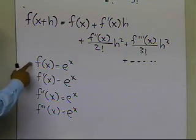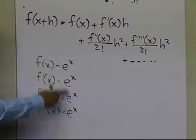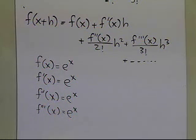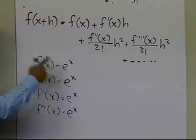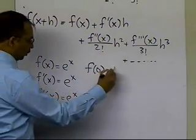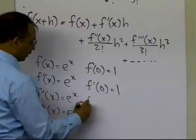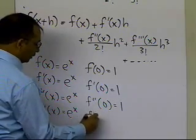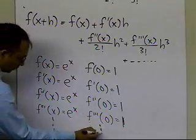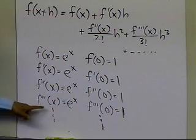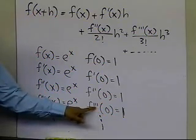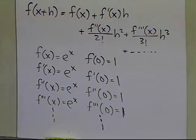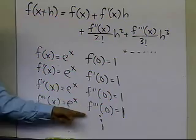What we know about e to the power of x is that we know the value at x equal to 0: e to the power of 0 is 1. We don't directly know the value of e to the power of something other than 0. So the value of the function at 0 is 1, the value of the derivative at 0 is 1, the value of the second derivative at 0 is 1, and the third derivative at 0 is 1, and so on. All the derivatives of e to the power of x evaluated at 0 are simply 1.